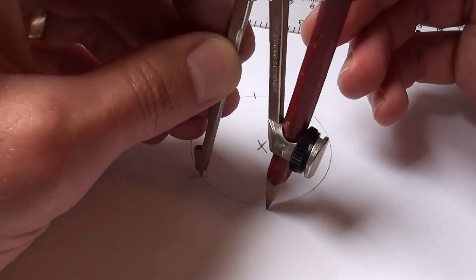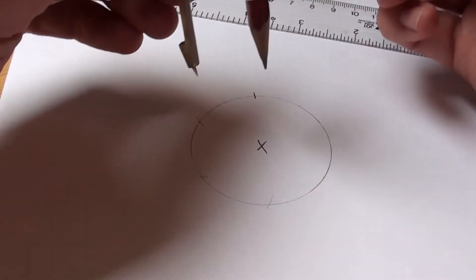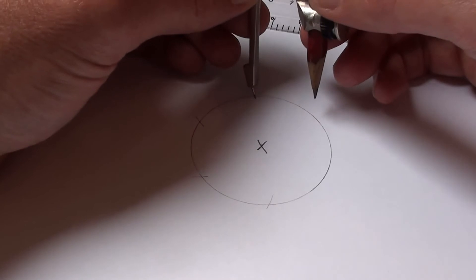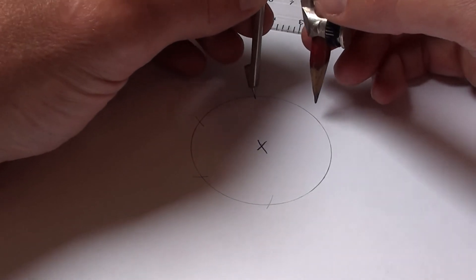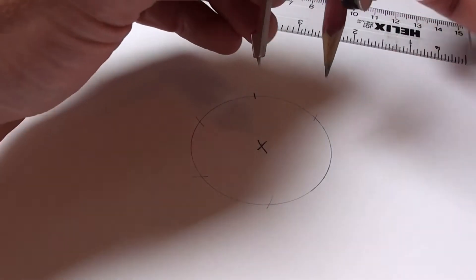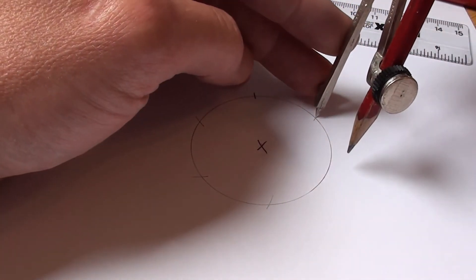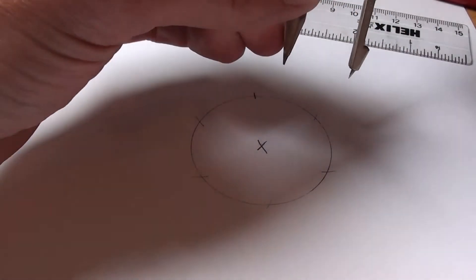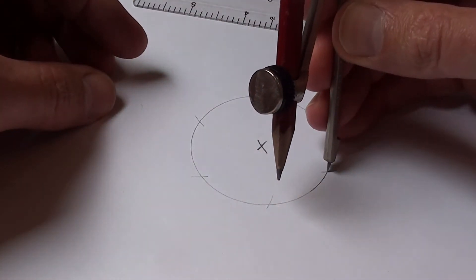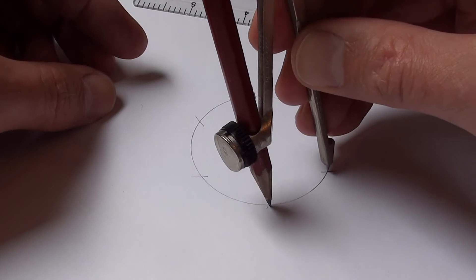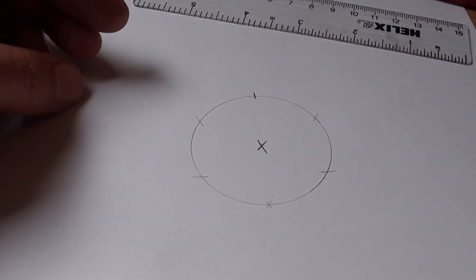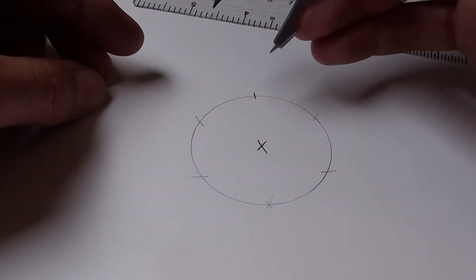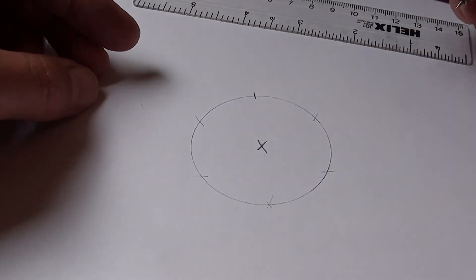And due to the geometry of hexagons and equilateral triangles and such things, using the same radius will give you six exactly equally spaced marks around the circumference of that first circle. Or it should do. Let's see if this last one meets up. Dead on. Excellent. So that's six equally spaced marks around the circle.